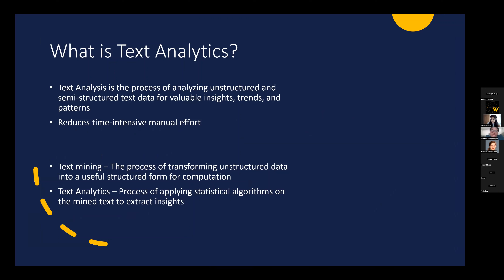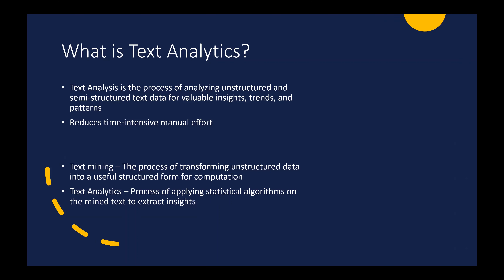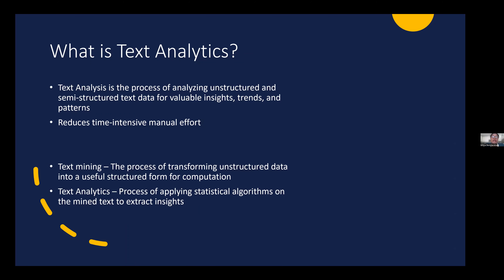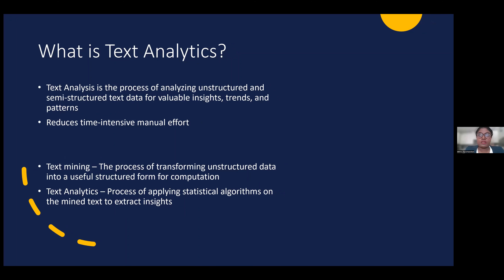Before going into text analytics, you're probably familiar with data analytics, where we use field tables — called structured data. For text analytics, we use unstructured and semi-structured data. Unstructured data is mostly free text, like reviews, with no fixed form. Semi-structured data sits in between, such as HTML, JSON, or XML. Using these kinds of data to extract insights, find trends, and give recommendations is what text analytics is.